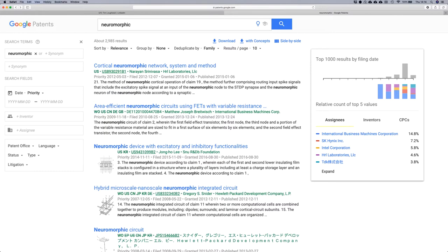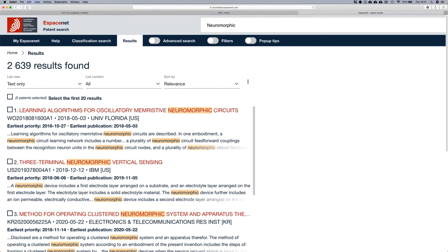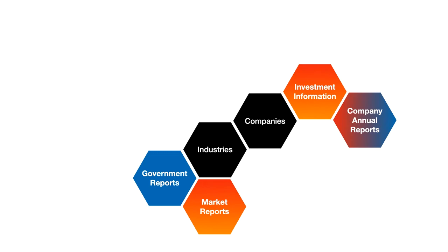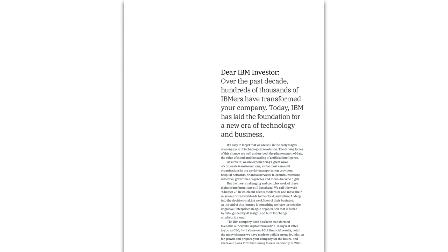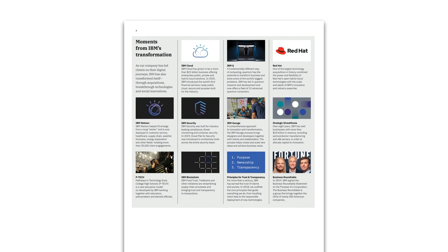Staying with industry for a moment, let's move on to higher-level, more strategic information. If you want to know what a specific company is doing, one option is to look at their annual report. For large corporations, this information is usually freely available for investors or potential investors, which could be anybody. As you'll see in these pages from a recent IBM annual report, these documents contain a mixture of glossy public relations material, status reports, plans for the future, and statutory financial information.